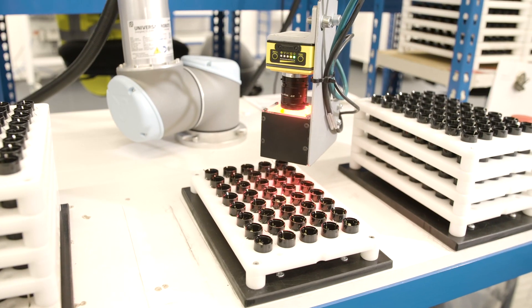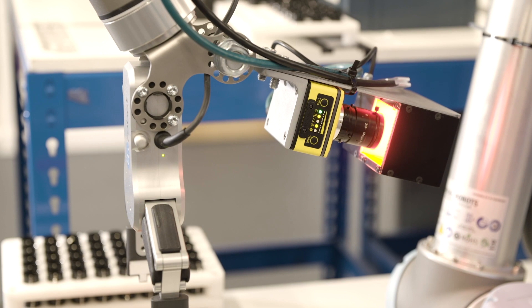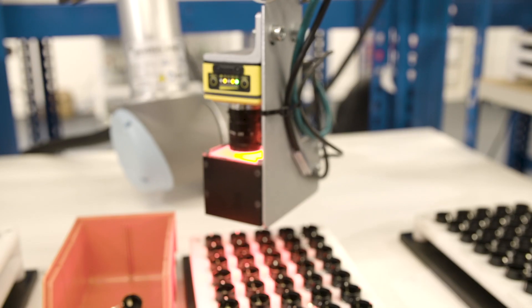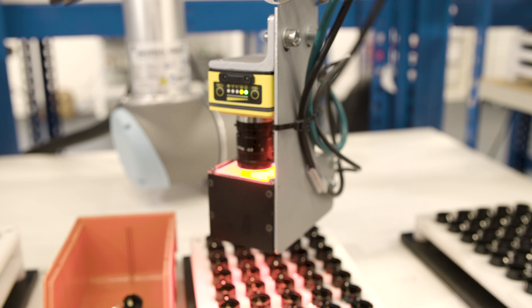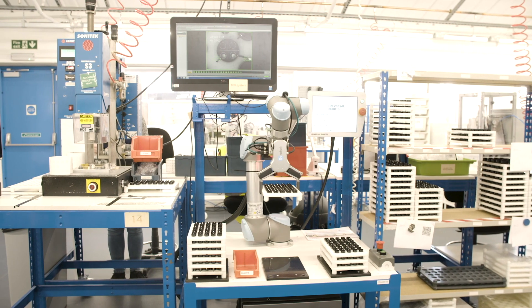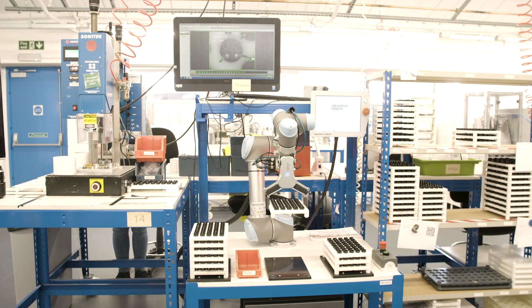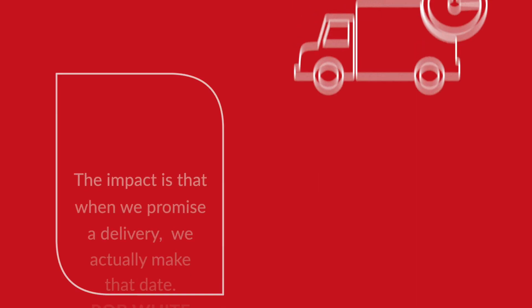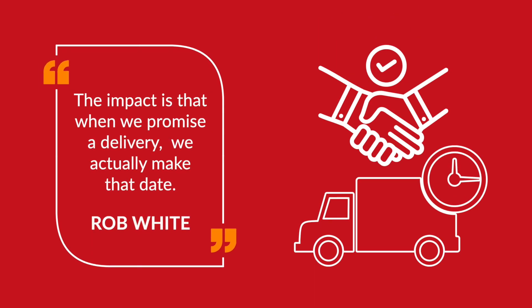What we found is using Flowlens has allowed us to have more efficient processes. Working to the way that Flowlens works for production orders — for example, job cards — has actually made us think very carefully about how we manage production orders, and I think we have a much more efficient system now as a result. The impact is that when we promise a delivery, we actually make that date.